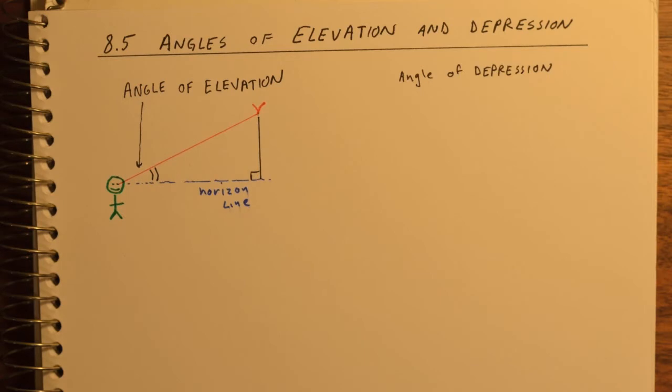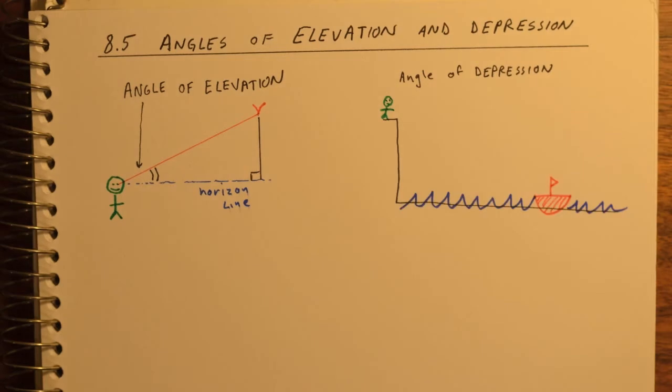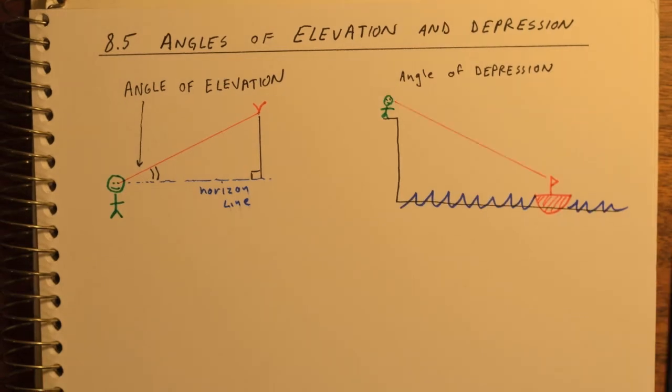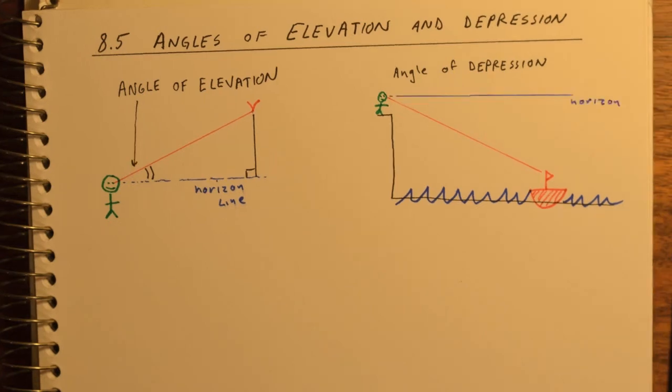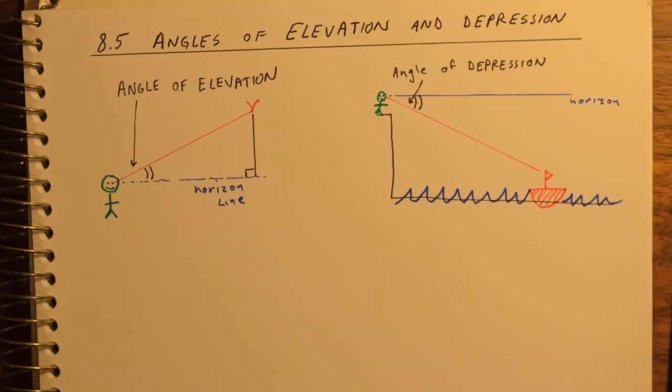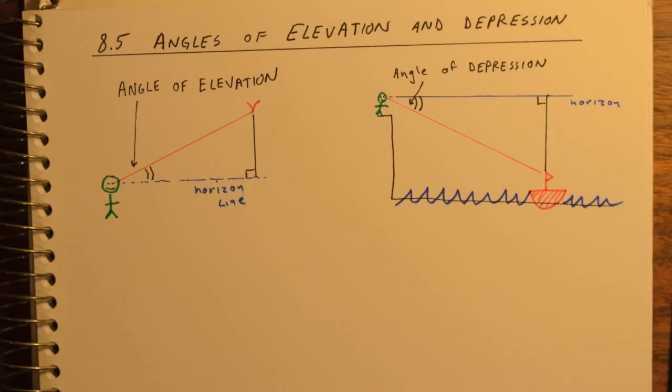Angle of depression is a similar idea. In this case, let's say you're standing on the edge of a cliff looking down at an object. The angle of depression is again made with your line of sight and the horizon line. The distance from the horizon line to the object that you're looking down to creates a right triangle, and so we can solve using trigonometry.